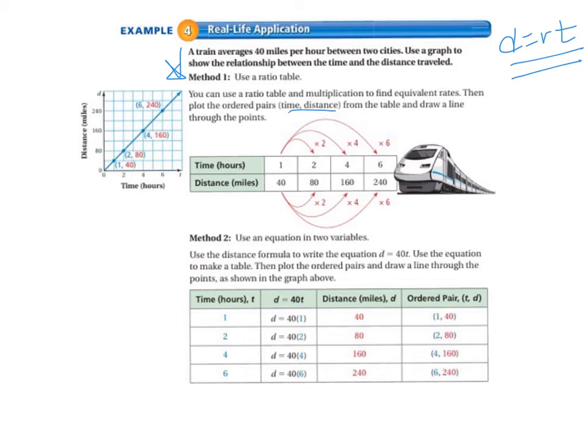So when we do that, it says that the train is traveling 40 miles per hour. So that's 40 miles for one hour. And so if it's going 40 miles in one hour, in two hours, it would be going 80 miles. And in four hours, it would be going 160 miles. So we're just multiplying to get across the ratio table, and we know how to do that.